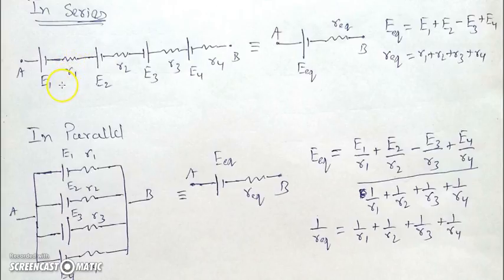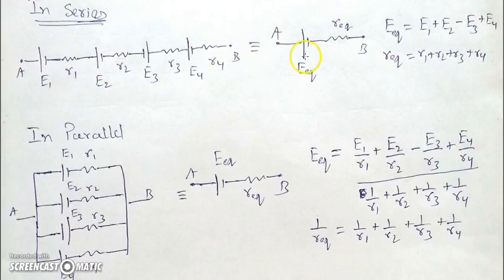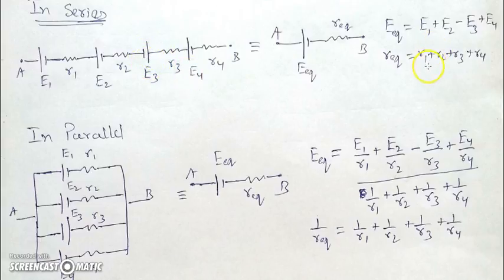The equivalent of cells in series — look at the polarities: e1, e2, and e4 are in the same polarity, while e3 is attached with reversed polarity, opposing the other three. So the equivalent EMF will be the sum of e1, e2, e4 minus e3. The equivalent resistance has no change due to polarity, so r_equivalent equals r1 plus r2 plus r3 plus r4.